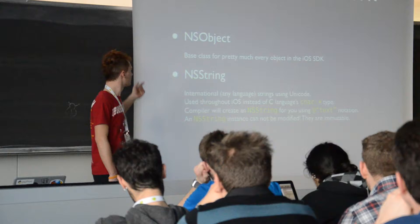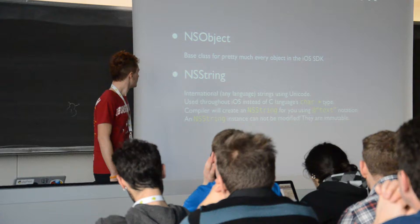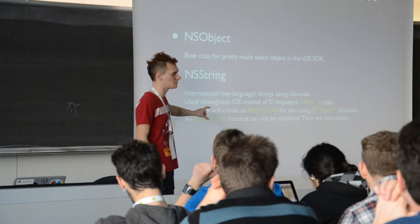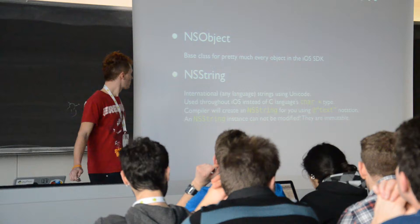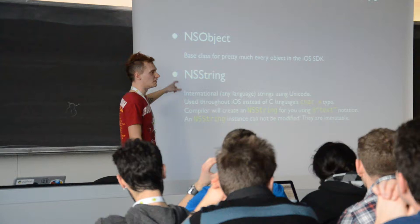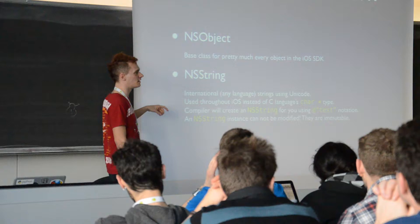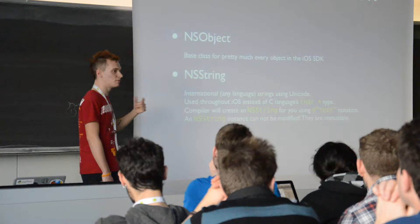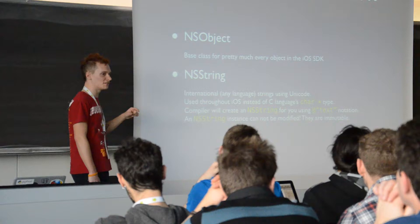For example, NSObject — that is like Object in Java. Then you have NSString for strings. An important thing is that if you define an NSString, you will not be able to change the value of the string. To change the value you have to use NSMutableString. This applies to every type — if you define an integer using NSInteger, you are not able to change the value. To change it you have to use NSMutableInteger.